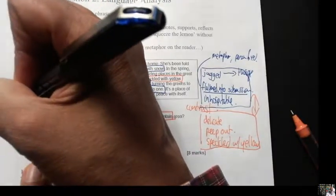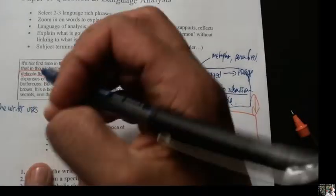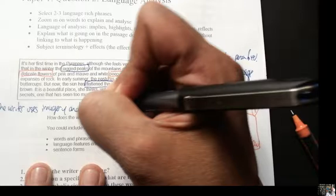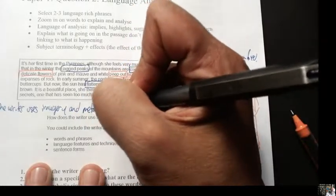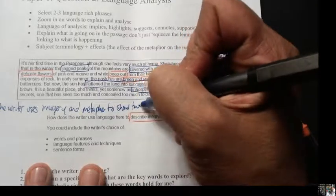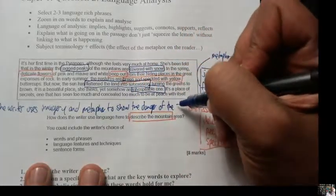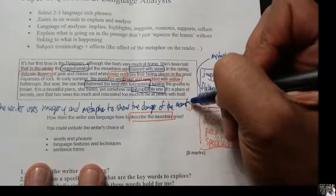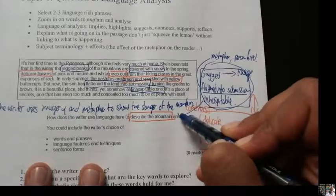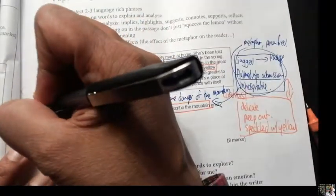The writer uses imagery and metaphor to show the danger of the mountain, maybe? I don't know if I'm going to stand by that. But what I'm doing is I'm using my evidence to make my topic sentence, my point in the old money.